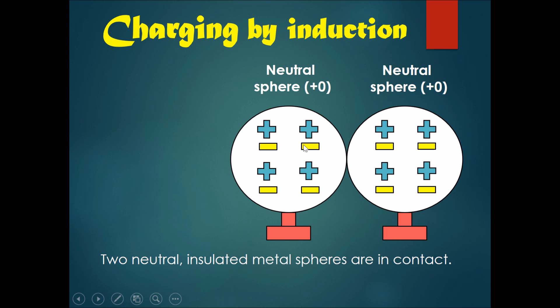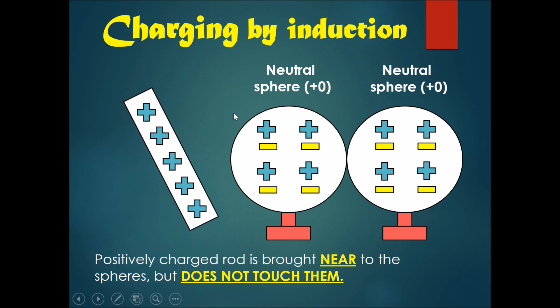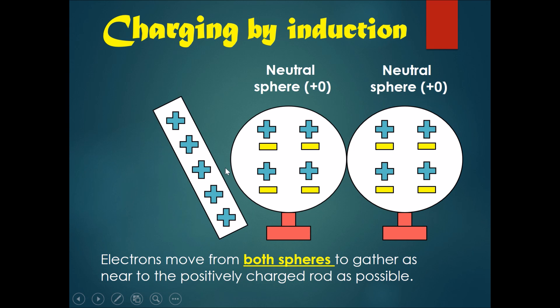Then get a positively charged rod and bring it near the spheres. However, do not touch the spheres—this is charging by induction, not by contact. Once we bring it near enough, electrons will start moving.